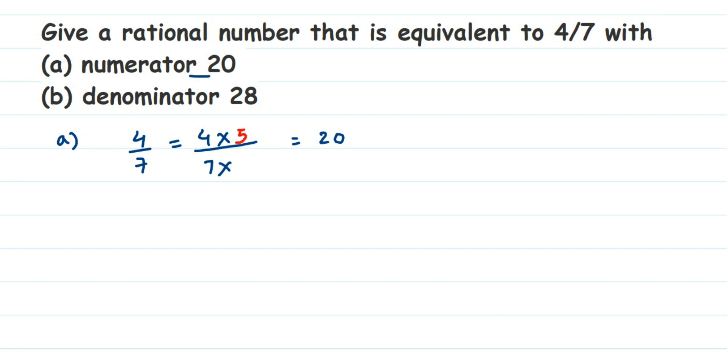When you're finding an equivalent rational number, like I said, you can multiply or divide. When you're multiplying or dividing, you should do it with the same number in the numerator and denominator. So we got 5. 4 times 5 is 20 and 7 times 5 is 35, so 20/35 is an equivalent rational number of 4/7 with numerator 20.